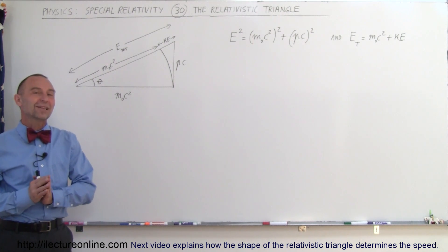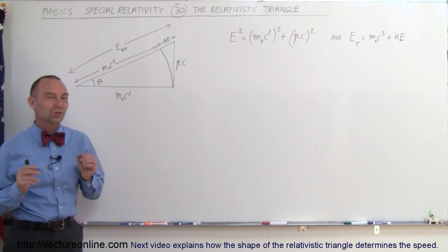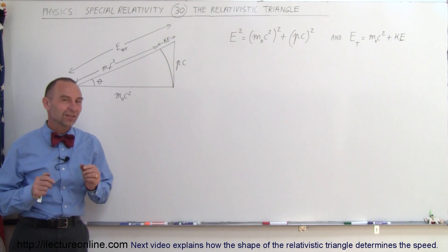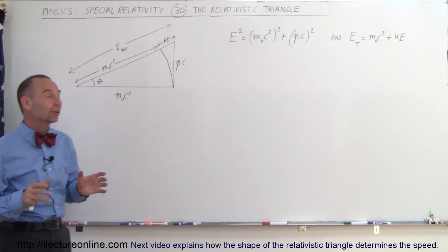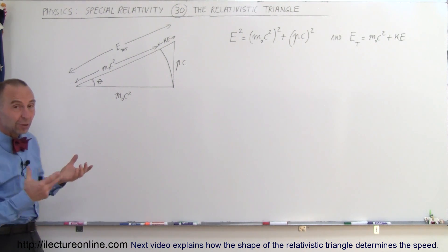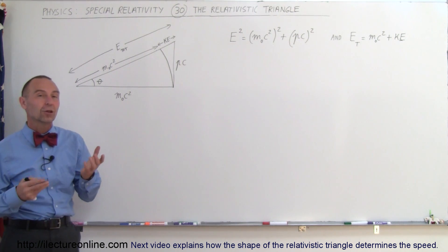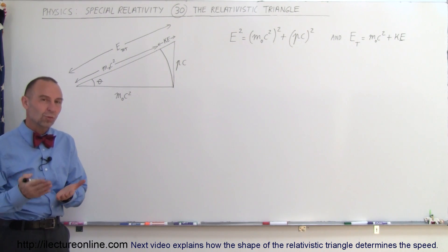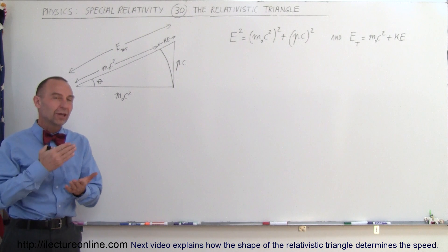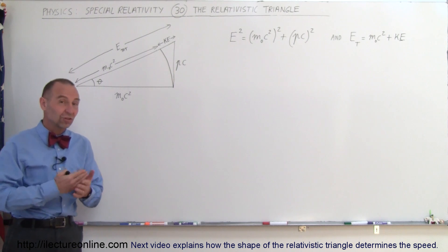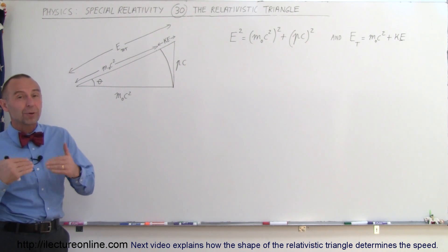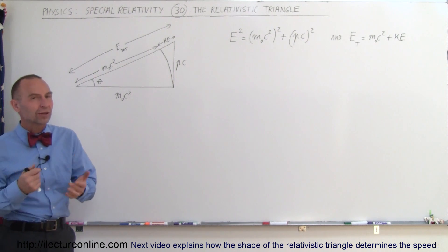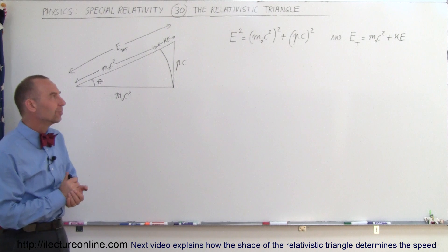Welcome to Electron Line. Now let's take a look at what we call the relativistic triangle. This is actually a really ingenious method of graphically representing the relationship between the momentum, the rest mass energy, the total energy, and the kinetic energy of a particle at relativistic speeds.